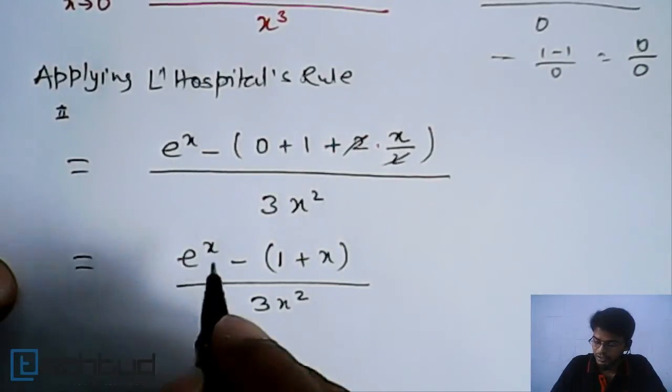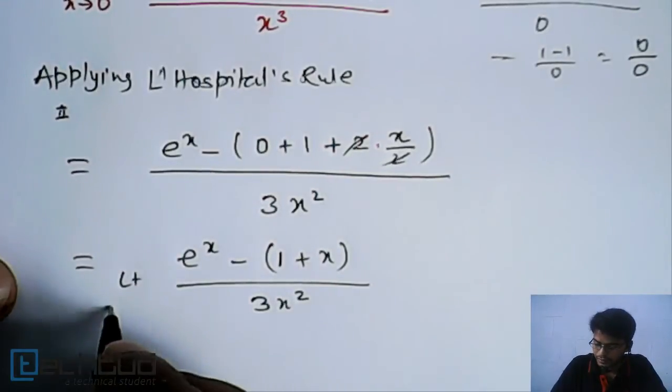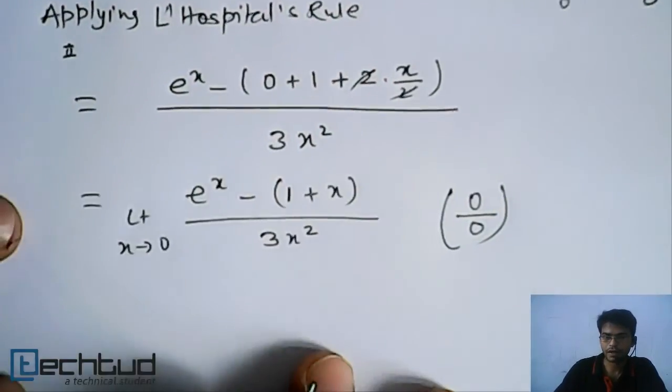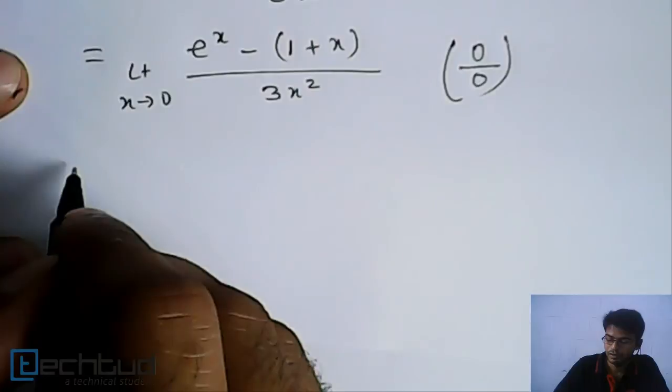So this is again an indeterminate form. Obviously limit x tends to 0. If you put the value again, this is 0 by 0. So we will again apply L'Hospital's rule here.